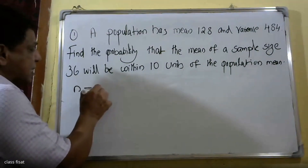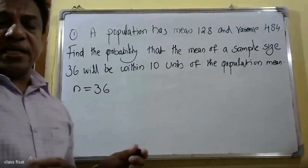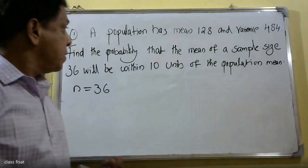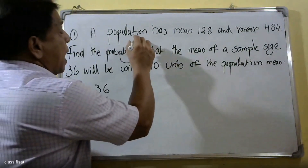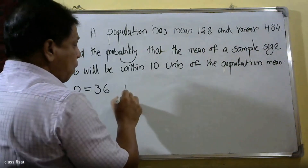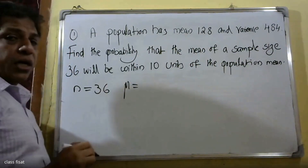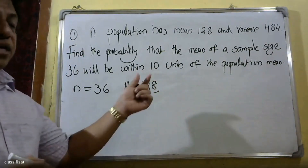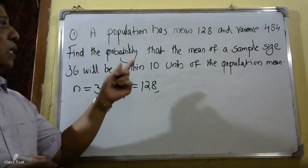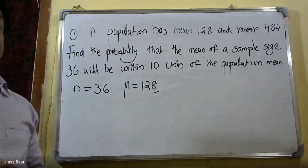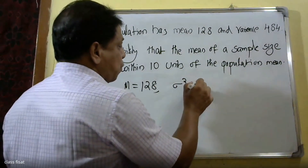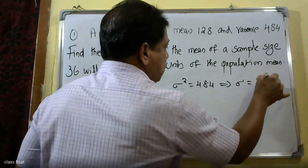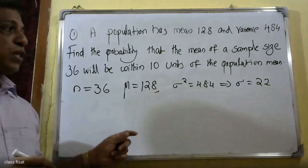The sample size is equal to 36, which is greater than or equal to 30. The population mean mu is equal to 128, and the population variance sigma squared is 484. Therefore, sigma is equal to 22, since the square root of 484 is 22.